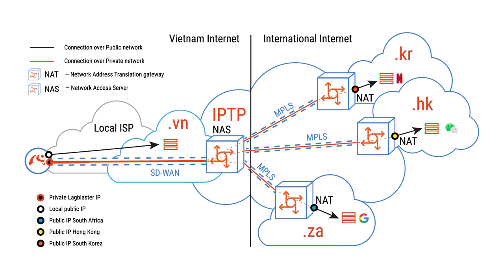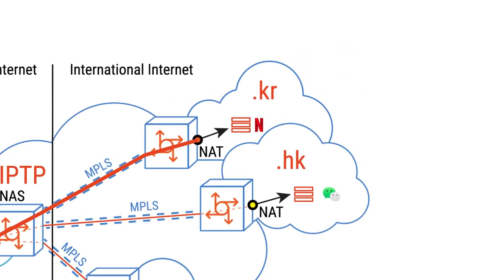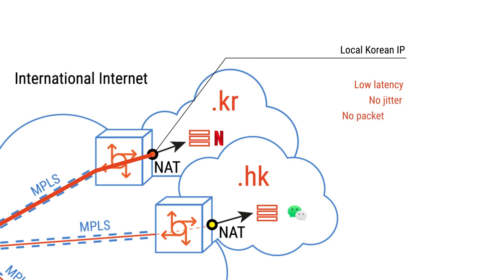For example, if a Lag Blaster user wants to connect to content in Korea, the traffic will pass through our clean and optimized MPLS links from Vietnam to Korea. In Korea, we have a network address translation gateway that translates the customer's private IP address to a local Korean IP address. By using a Korean IP address as the source IP address, the path from our gateway to Korean content is optimized in a symmetric routing path via Korea's domestic internet, with low latency, no jitter, and no packet loss.